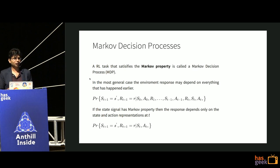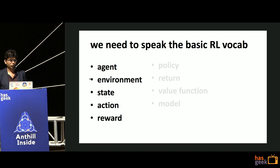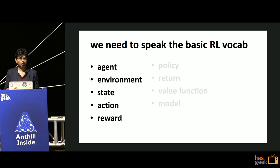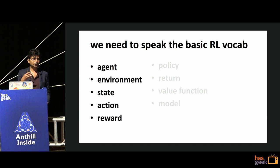Now we come to the basic RL vocabulary. We know: agent is the paddle, environment is the entire grid, state is the pixel values, action is moving the paddle up or down, reward is plus one, zero, or minus one. Now we come to the other four concepts: policy, return, value function, and model. Once we have these four things, you'll have a clean understanding of the reinforcement learning problem.